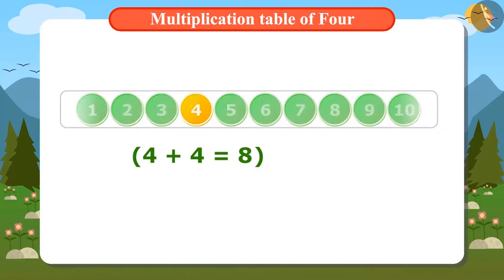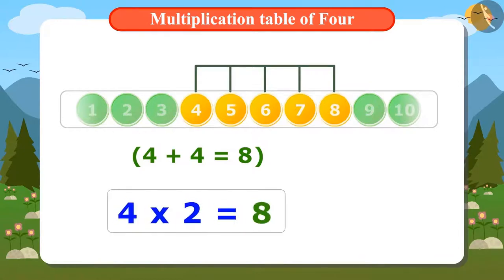Now we will find the 4th number after 4. That is 1st, 2nd, 3rd and 4th number is 8. The answer is the same in both ways. That is 8. That means 4 twos are 8.